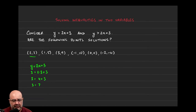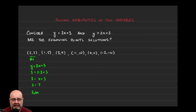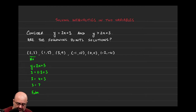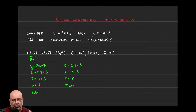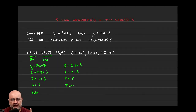We're getting 3 equals 7, which is obviously a false statement. So we would say this point is not on that line — it is not a solution to that equation because it doesn't yield something true when we plug it in. Similarly, if we try the point (1, 5): 5 equals 2 times 1 plus 3. I get 5 equals 2 plus 3, so 5 equals 5. That is indeed a true statement.